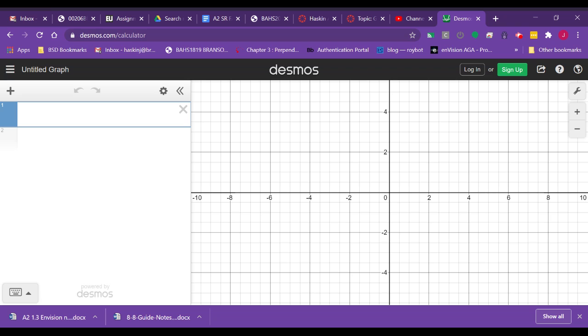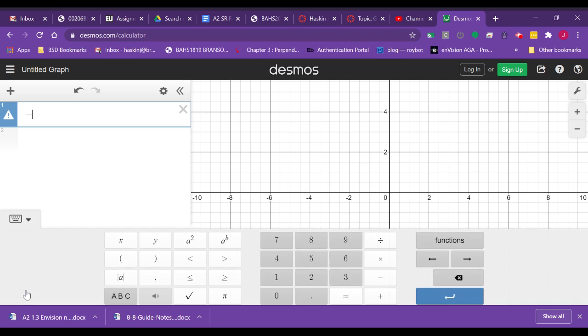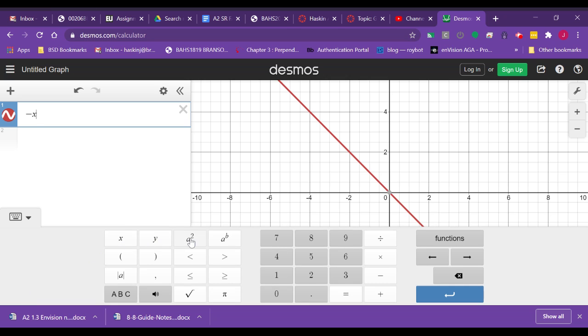So on the notes of 1.5 day 2, it says solve by using a graphing calculator to the nearest tenth. So the first equation, I'm just going to type in here, negative x squared. This right here, show keypad. I can type x squared plus 8x minus 13.